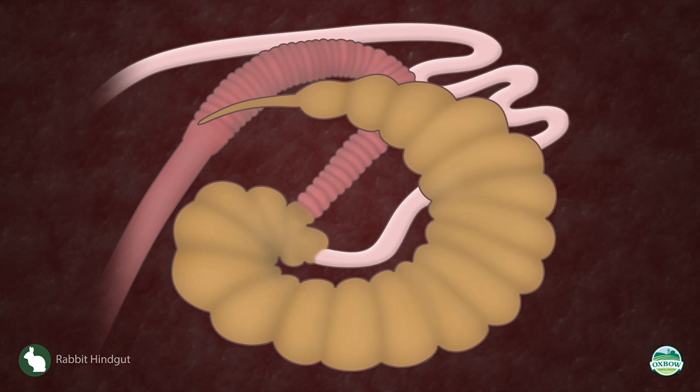If you want a rabbit, guinea pig, or chinchilla, one term you've probably heard is what's called the hindgut. The hindgut is a very unique anatomical component of many of our smallest herbivore species, mostly focusing on the cecum and the large intestine. Within that system, there's also a unique physiological trait referred to as a colonic separation mechanism.